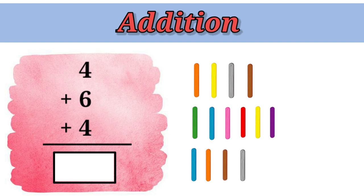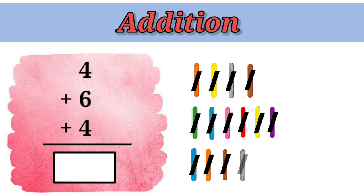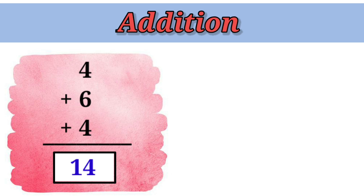Let's count all together. 1, 2, 3, 4, 5, 6, 7, 8, 9, 10, 11, 12, 13, 14. So, all together we have 14. Therefore, 4 plus 6 plus 4 equals to 14.